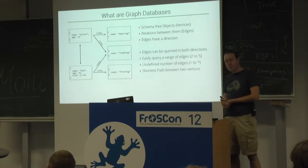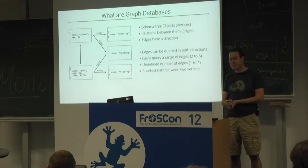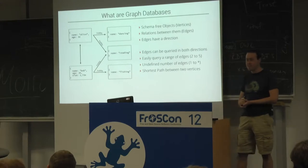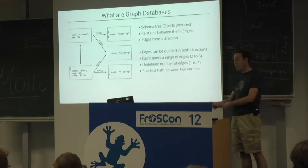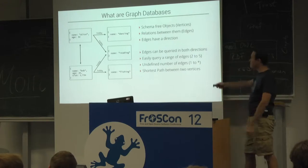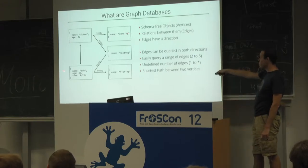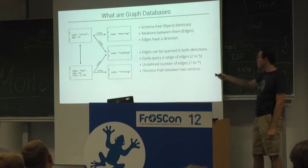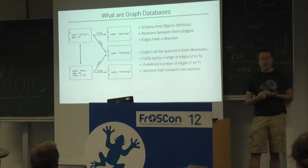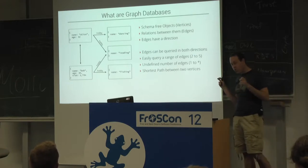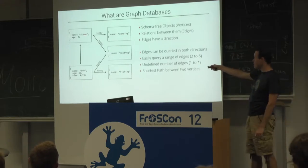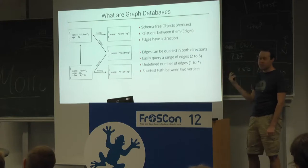Even more, you can say I don't know how many edges I have to take — please go as long as you find the first element that matches my filter conditions, whether it takes one edge, two edges, or five hundred. You can even say please pick two vertices and give me the shortest connection. In many cases, the shortest path is not deterministic because there may be a lot of paths of the same length.